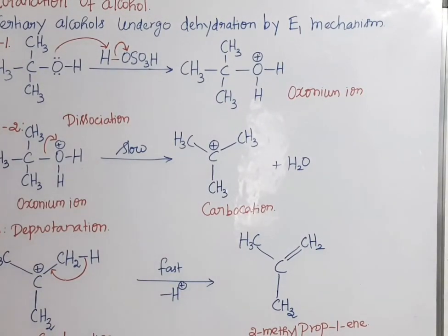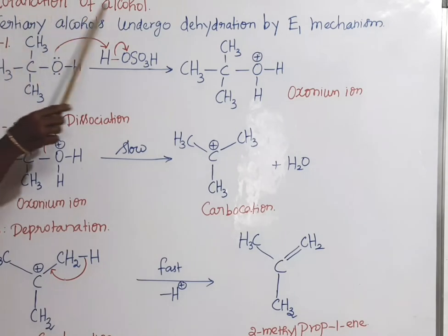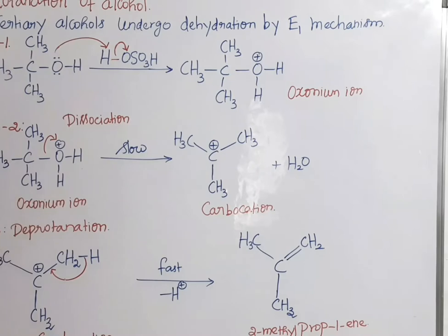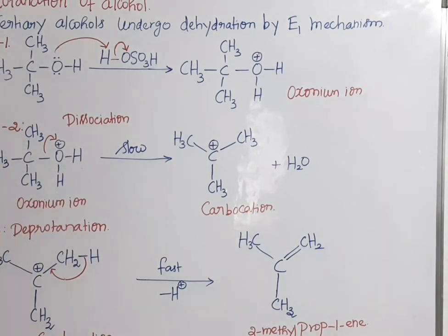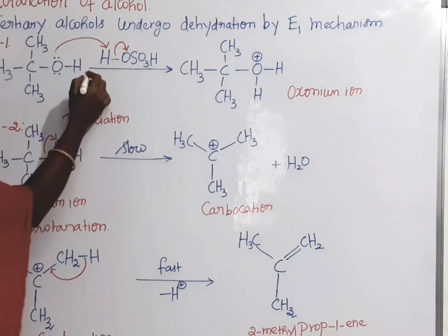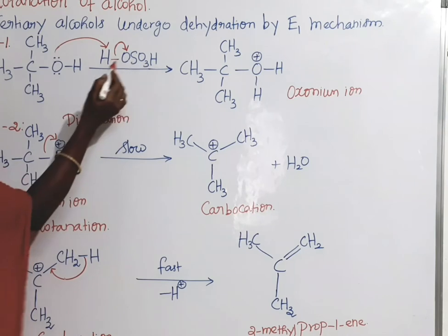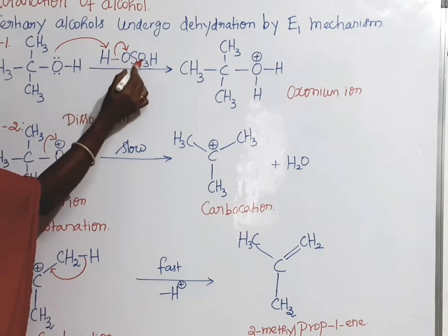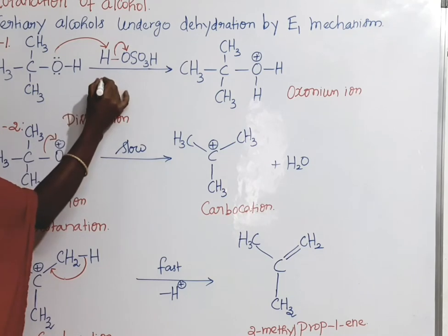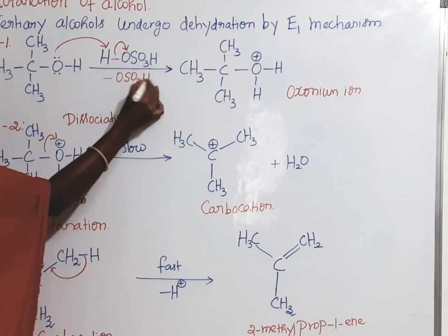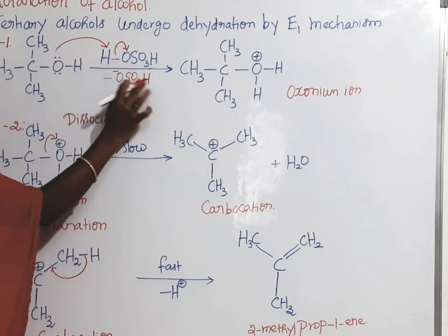What we're discussing is the protonation of alcohol. Tertiary alcohols undergo dehydration by the E1 mechanism. Here we have a tertiary alcohol that undergoes reaction with sulfuric acid, H2SO4. Sulfuric acid can be displayed as H-OSO3H, so we're talking about OSO3H minus.